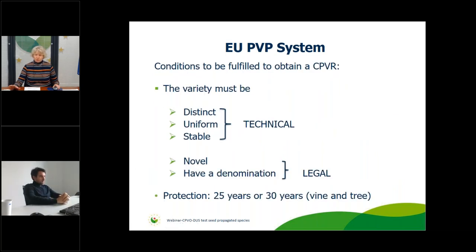The conditions to obtain a Community Plant Variety Right are that a variety must be Distinct, Uniform and Stable — DUS — which are the technical conditions. There are also legal requirements: novelty (the variety must not have been commercialized longer than one year within the EU or four years outside), and it must have a variety denomination. The protection period is 25 years for the majority of applications and 30 years for wine, trees, and potatoes under a special regime.